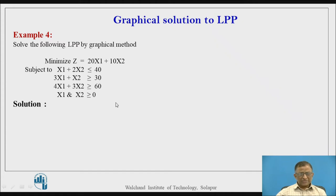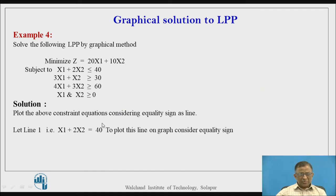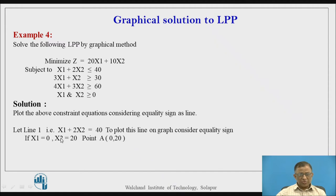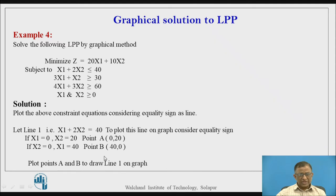We have to construct a graph where we plot each constraint as an equation of a line, considering only the equality sign. So every constraint is treated with equality sign. For the first constraint, x1 plus 2x2 is equal to 40. To plot this line on the graph, we assume x1 is 0, giving x2 as 20 — that is one point A. Similarly, if x2 is 0, then x1 is 40 — that is point B. Joining A and B, we can plot line 1 on the graph.